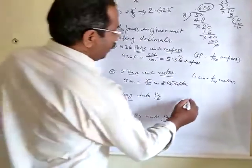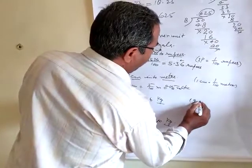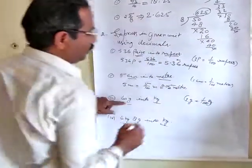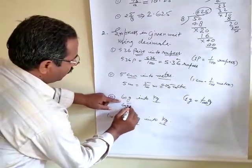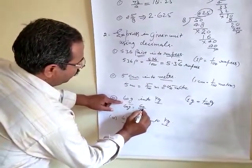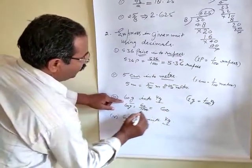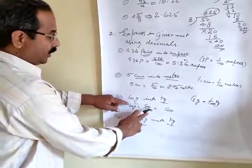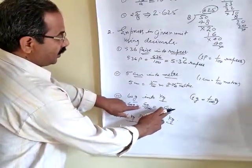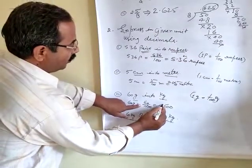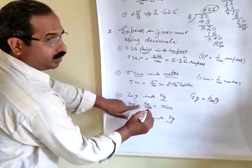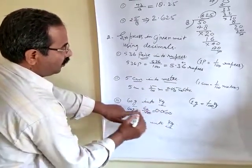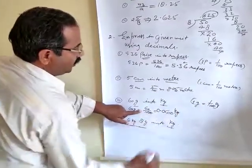In the same way, for gram into kilogram: 1 gram equals 1 by 1,000 kilogram. So 60 gram equals 60 by 1,000. Write the numerator 60. There are three zeros, so you need three digits — but 60 has only two digits, so increase one zero to the left. Put the decimal point and write zero before it. The answer is 0.060 kilogram.